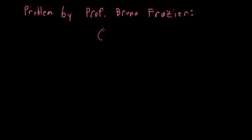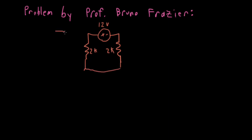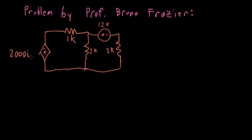In this problem we have a 12-volt source that's sandwiched between two 2K resistors, and then we have a 1K resistor, and then we have a current controlled voltage source. Notice that the minus terminal is facing upward. The voltage is 2000 IX, where IX is the current measured going down the 2K resistor on the right. The problem is to compute a Thevenin equivalent circuit looking into the right side of the circuit.